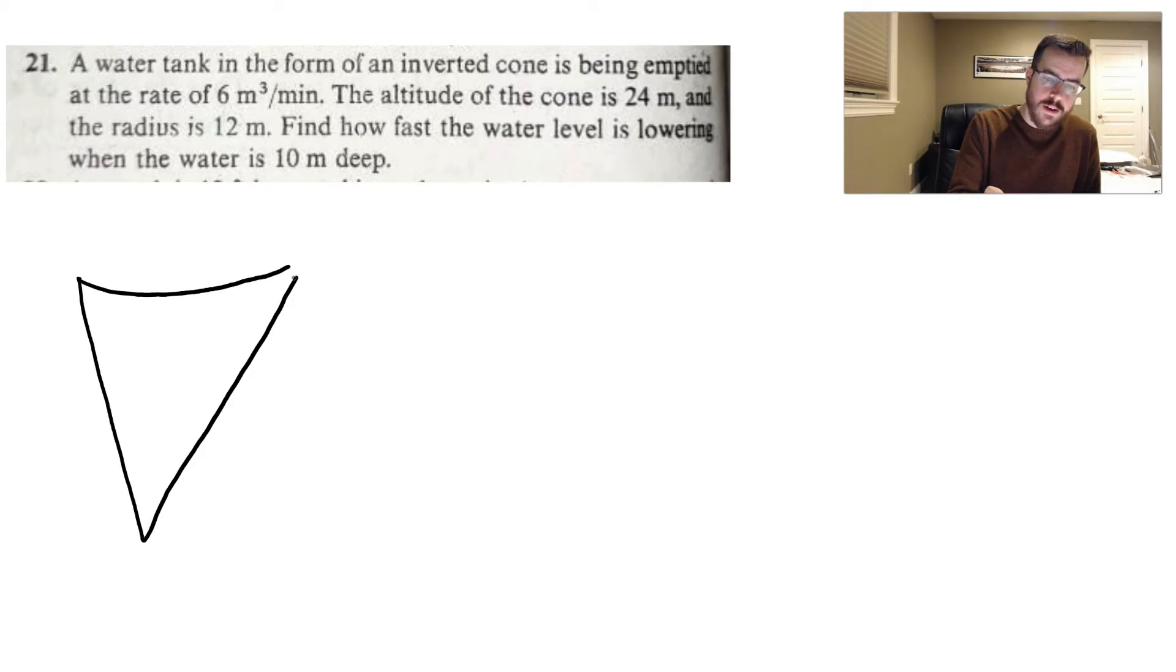The altitude was 24. So the altitude of this cone is 24 and the radius is 12. So what we want to do is figure out how fast the water level is lowering when the water is 10 meters deep.